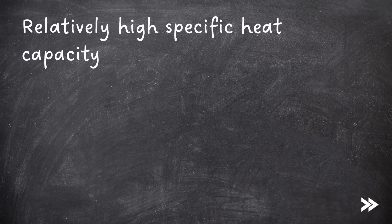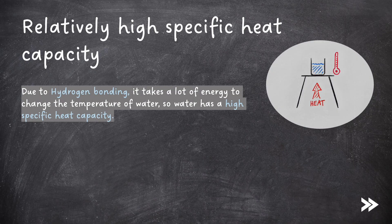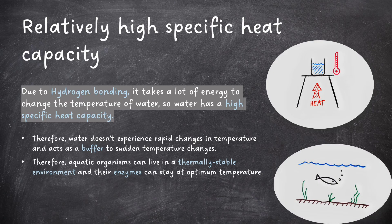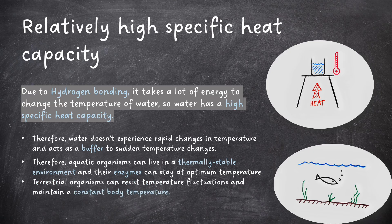Water has a relatively high specific heat capacity. Due to hydrogen bonding, it takes a lot of energy to change the temperature of water, so water has a high specific heat capacity. Therefore, water doesn't experience rapid changes in temperature and acts as a buffer to sudden temperature changes. Aquatic organisms can live in a thermally stable environment and their enzymes can stay at optimum temperature. It also means that terrestrial organisms can resist temperature fluctuations and maintain a constant body temperature.